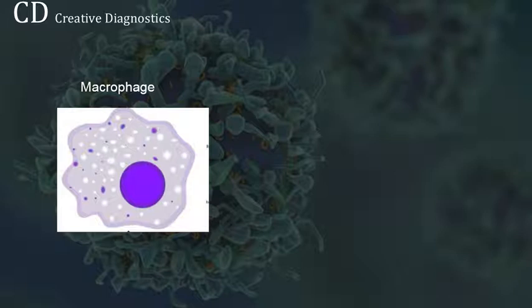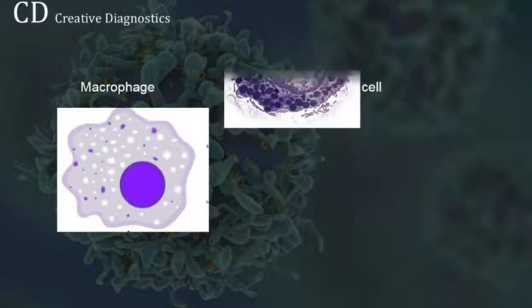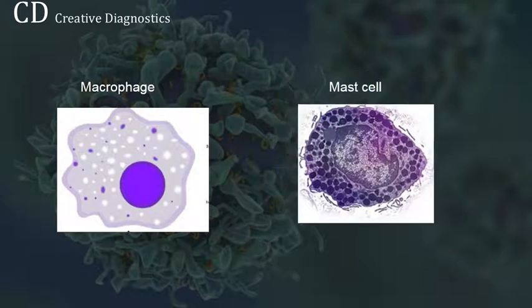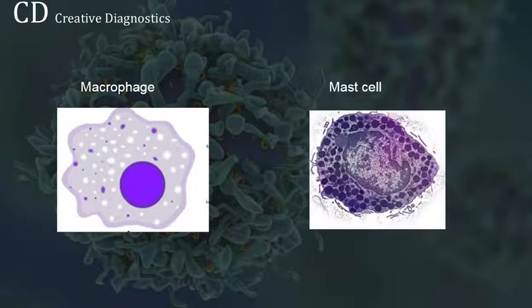A process by which macrophages engulf and digest cells and pathogens is called phagocytosis. Mast cells are tissue cells of the immune system of vertebrate animals that mediate inflammatory responses such as hypersensitivity and allergic reactions.